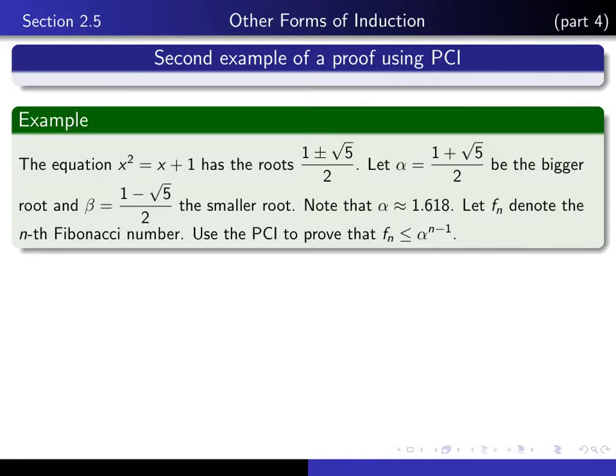Here's the one that we're going to do. It concerns the Fibonacci numbers that we introduced in the previous video. If you consider the equation x squared equals x plus 1 and you solve it using the quadratic formula, you'll discover that the roots of it are 1 plus or minus root 5 over 2. We're going to let alpha denote the bigger of those two roots and beta denotes the smaller of the two roots.